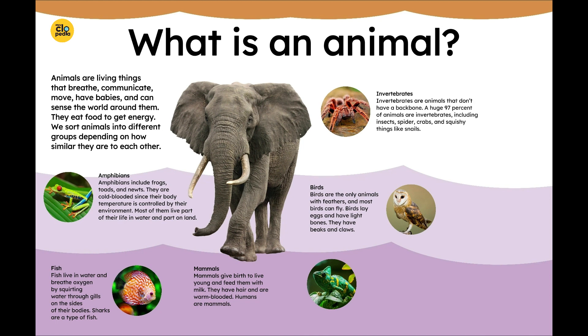Fish. Fish live in water and breathe oxygen by squirting water through gills on the sides of their bodies. Sharks are a type of fish.